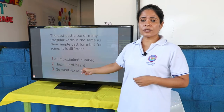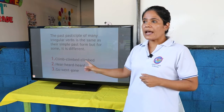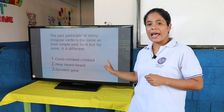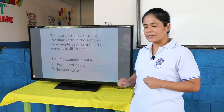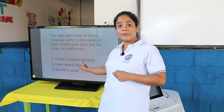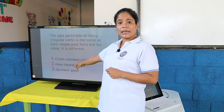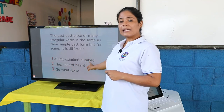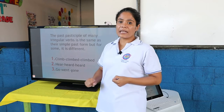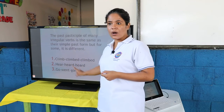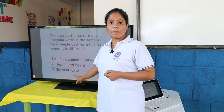We have: climb, hear, and go. We have the simple past but we also have the past participle of the verb. Climb — climbed — climbed. Climb: simple present, presente simple. Climbed: simple past, pasado simple. Climbed: pasado participle. The same with hear — heard — heard. And the same with go — went — gone. Si ustedes notan, go es el presente, pasado simple went, y pasado participle gone.